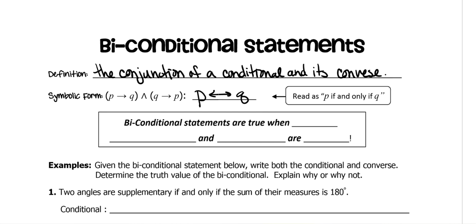It will look like this where there is an arrow on both ends, because it can be read both forward or backwards and would be true. I mean that you take the conclusion, read it first and the hypothesis second, and it can still make sense. Biconditional statements are true when both — and it must be both — the conditional and converse are true.